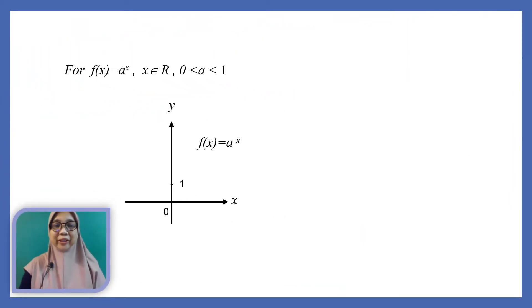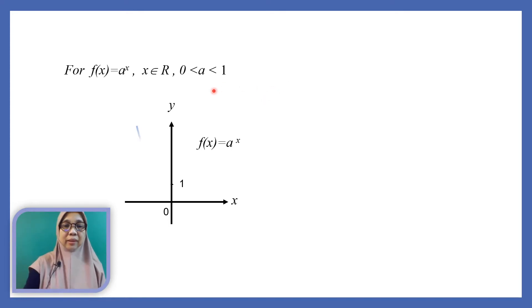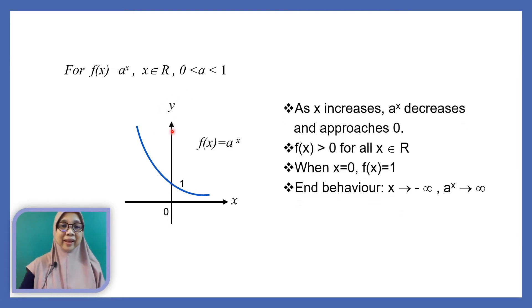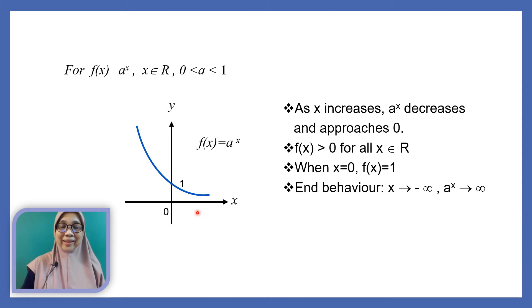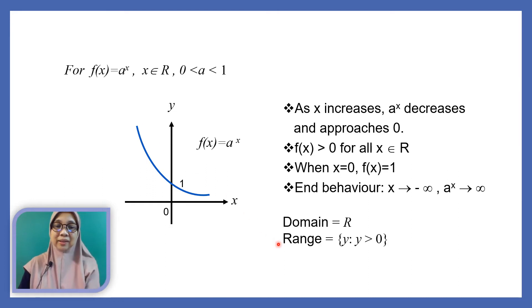What is the shape of the graph if the value of a lies between 0 and 1? Observe that as x increases, a to the power of x decreases and approaches 0, and f(x) is always positive for all x in ℝ. When x is 0, f(x) is still 1. As x approaches negative infinity, a to the power of x approaches infinity. The domain is still ℝ, and the range is still y greater than 0.